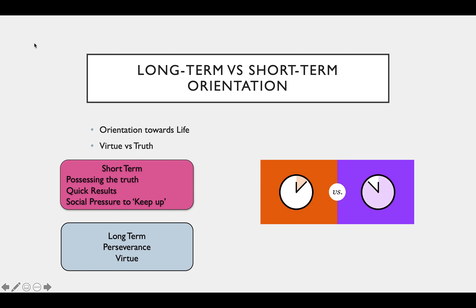Lastly, long-term versus short-term orientation relates to how you feel about life in terms of virtue versus truth. Short-term orientation means people are concerned with quick results, societal pressure to keep up, and getting exactly what they want immediately. Long-term orientation involves perseverance and virtue — it doesn't matter how long it takes, you work toward what you really want rather than seeking quick self-gratification. This can tie into religion; Buddhism, for example, aligns with long-term orientation. In Paul's study, students preferred long-term orientation.